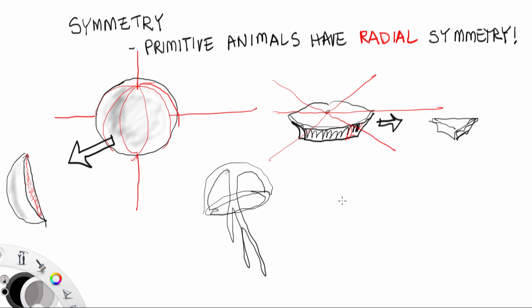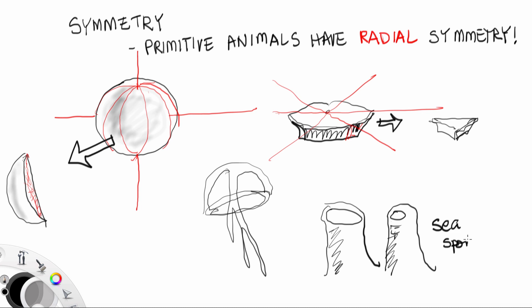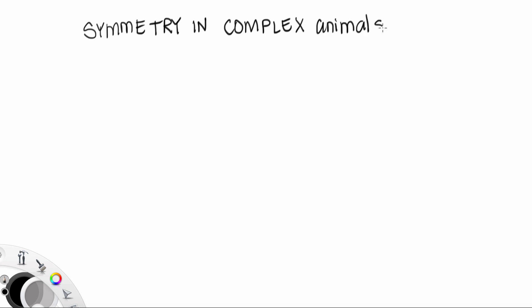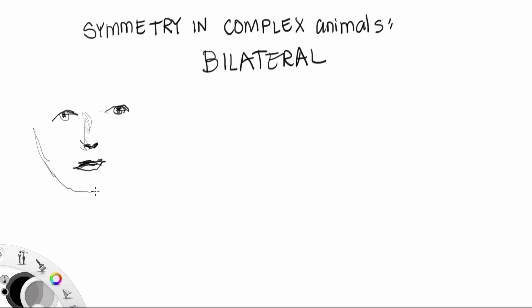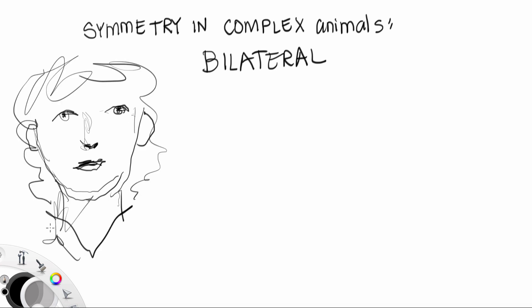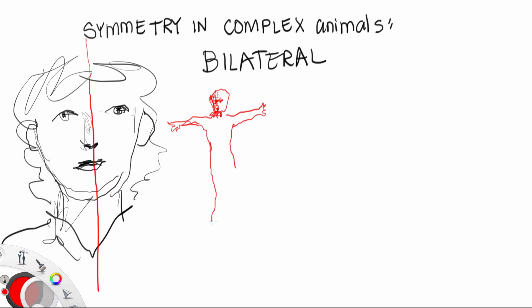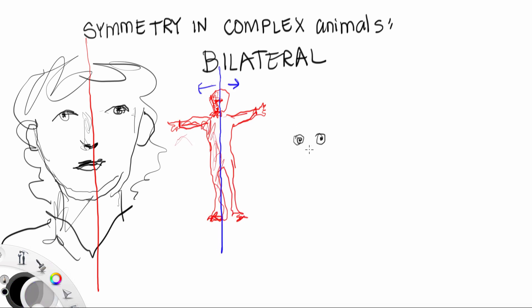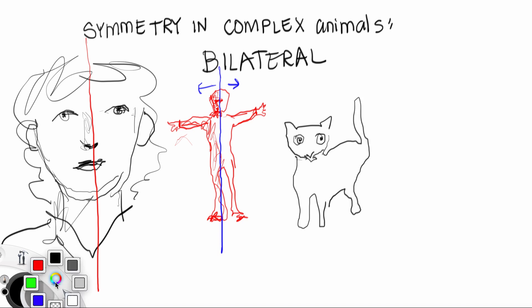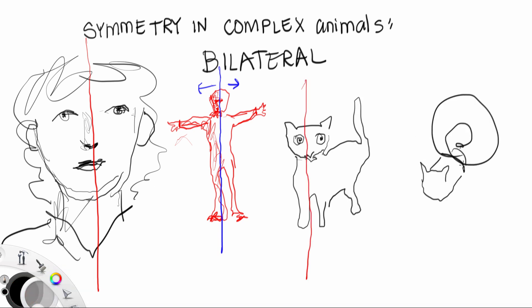It turns out that invertebrates, such as sea sponges and jellyfish, exhibit radial symmetry. The other kind of symmetry happens in complex animals — they evolved later. They have bilateral symmetry. The easy way to look at this is a human face, where you can divide that into left and right mirror images. A human face and a human body is bilaterally symmetrical, and also other vertebrates, and also invertebrates.